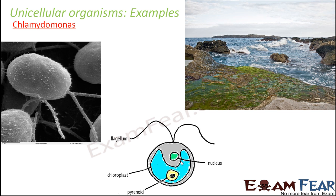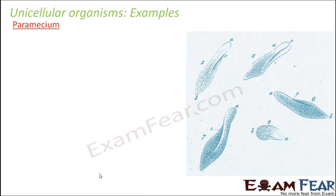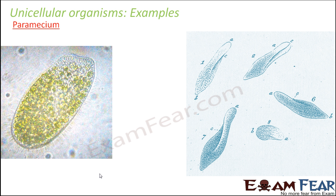Inside the chlamydomonas cell, you have various parts like the nucleus, chloroplast, and pyrenoids — we will talk about the parts of the cell later. Another example of a unicellular organism is paramecium. Paramecium is also a microorganism and a protozoa. This one cell takes care of all the functions that need to be performed.